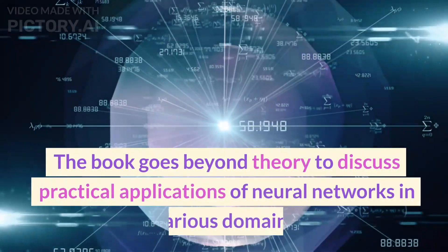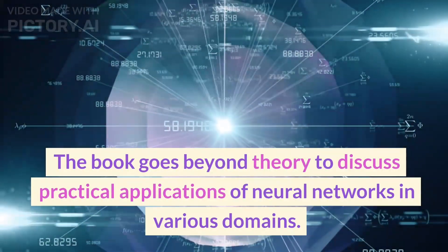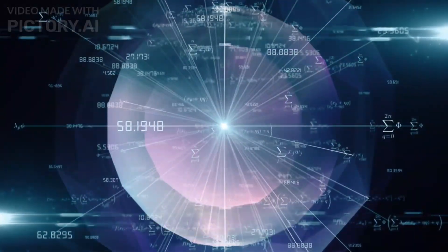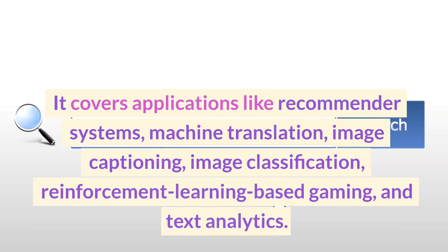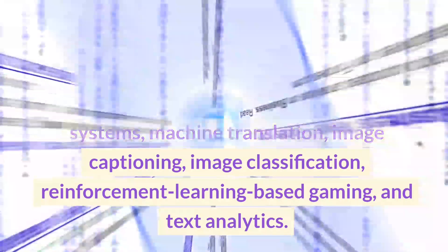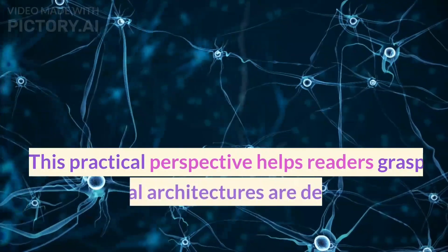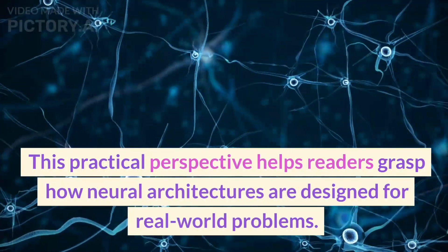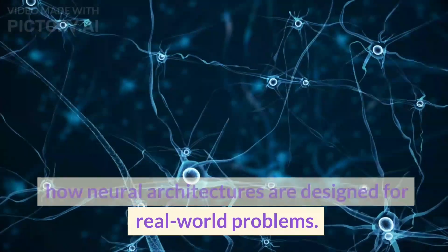The book goes beyond theory to discuss practical applications of neural networks in various domains. It covers applications like recommender systems, machine translation, image captioning, image classification, reinforcement learning-based gaming, and text analytics. This practical perspective helps readers grasp how neural architectures are designed for real-world problems.